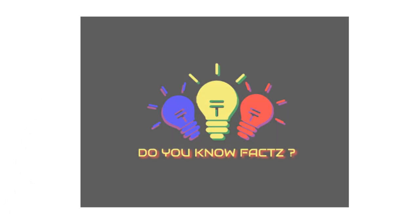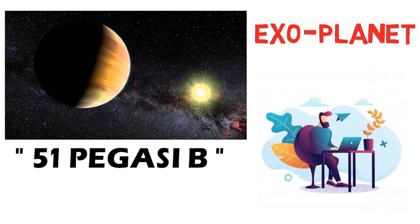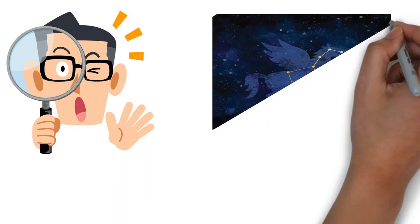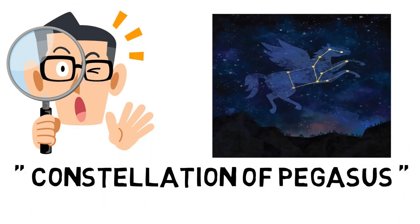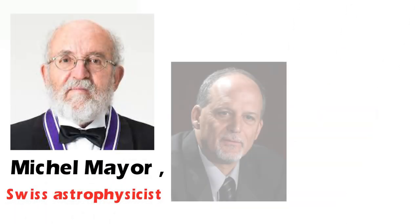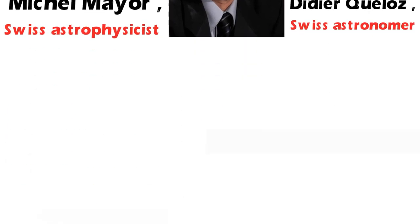Hey Learners, do you know the 51 Pegasus B is the first exoplanet found by humankind? It is 50 light years away from our Earth and it was discovered in the constellation of Pegasus on October 6, 1995 by these three people: Michel Mayor, a Swiss astrophysicist, Geoffrey Marcy, an American astronomer, and Didier Queloz, a Swiss astronomer.